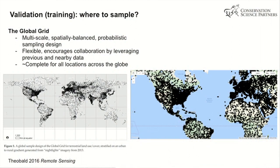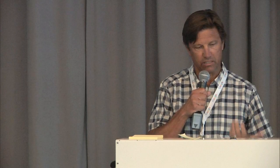That brings us to validation. We think about a couple of things: where to sample, and what to sample. For where to sample, I've been working on this idea of the global grid, which is a multi-scale, spatially balanced, probabilistic sampling design that covers the entire world, all the way from very coarse resolution down to 30 meters resolution everywhere. It's flexible and encourages collaboration by leveraging previous and nearby collected data. Because it's complete for all locations across the globe, and we make this available, I'm hoping this can provide some means for collaboration.